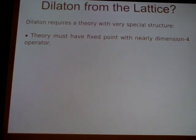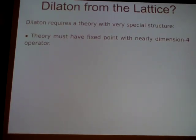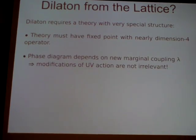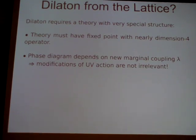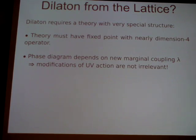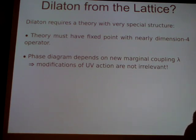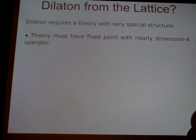Now, suppose you wanted to study this on the lattice. You have to face the fact that you require a theory with very special structure. The theory must have a fixed point with a nearly dimension-4 operator — in a strongly coupled theory, that is very non-generic. And if you find that, the phase diagram on the lattice depends on a new dimensionless parameter that is probably not apparent in your action. If you just have some Wilson action with some fermions, this hidden parameter is not visible, and changing things in your action might give you a totally different low-energy theory. So it would be very, very challenging to study these on the lattice.